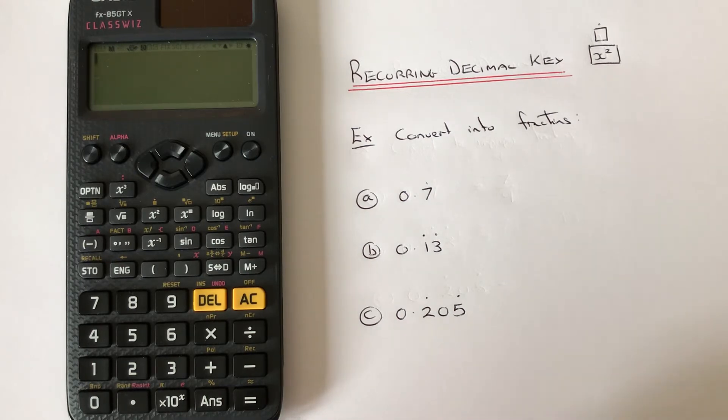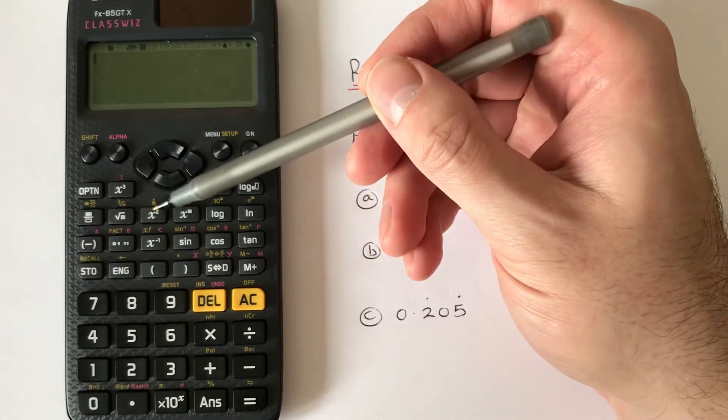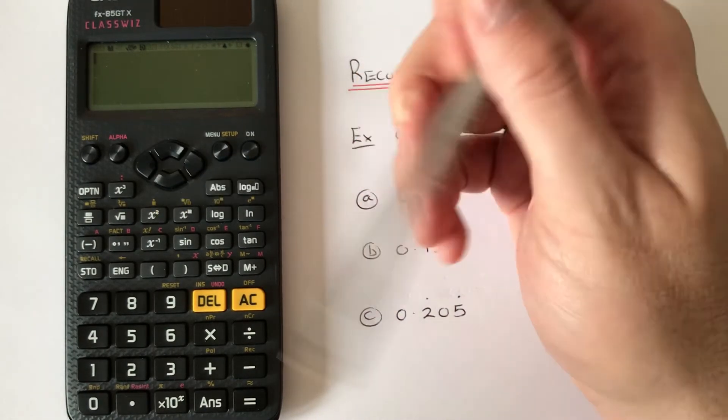You'll need to find the recurring decimal key, which is the second function on the x squared key, so we press shift x squared.